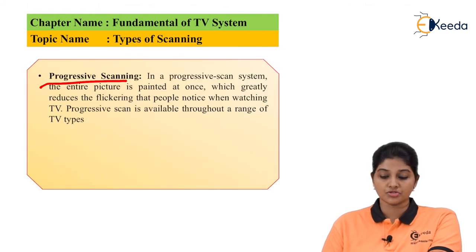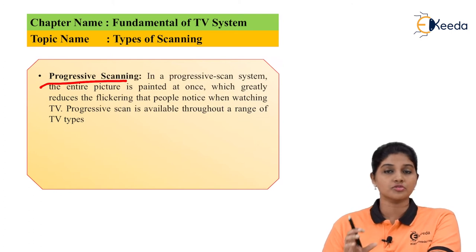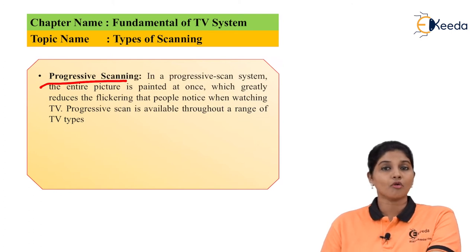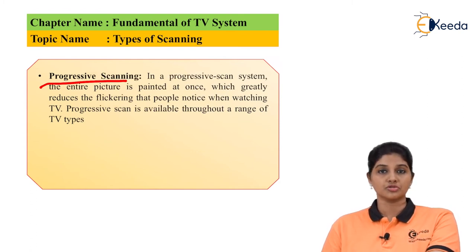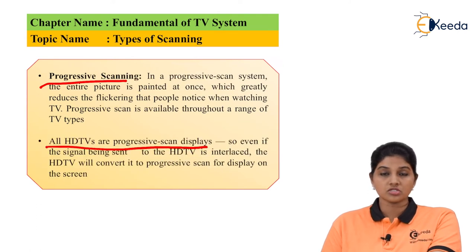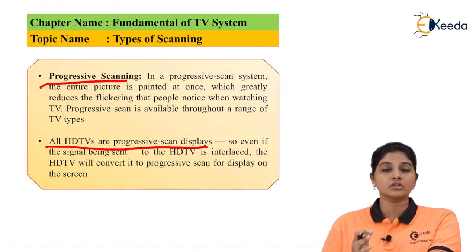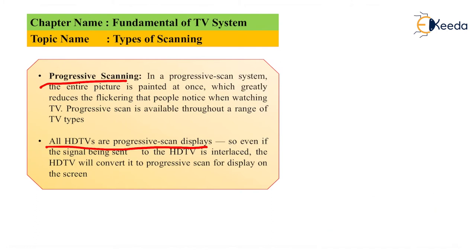The second type is progressive scanning. In progressive scanning, the entire picture is painted once on the screen, which reduces the flickering observed by viewers. The flickering problem that occurs in interlaced scanning is overcome in progressive scanning because the entire picture appears on the screen at once. All HDTVs use progressive scanning, and even if an interlaced signal is transmitted to an HDTV, the HDTV has the ability to convert that interlaced scanning signal into a progressive scan signal on the screen.